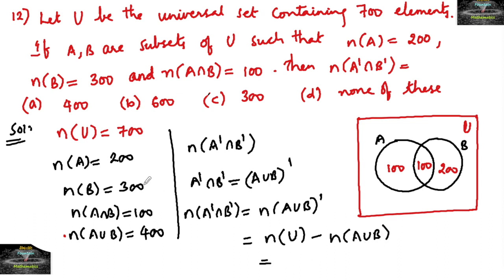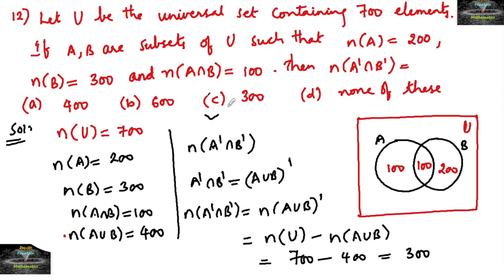The total number of elements in the universal set is 700 and the number of elements in A ∪ B is 400. So the answer is 700 − 400 = 300. Therefore option C is the right answer.